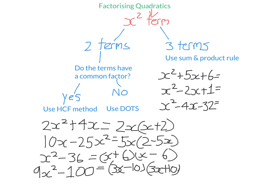So what about if a quadratic has three terms? We use the sum and product rule. When you're doing these, you set up two brackets and put an X in each bracket. We need two numbers that multiply to the constant term and add to the middle term — multiply to the number that's by itself and add to the coefficient in front of X. So the two numbers that multiply to 6 and add to 5: 6 doesn't have that many factors — it's 2 and 3. Two plus 3 is 5, and 2 times 3 is 6.